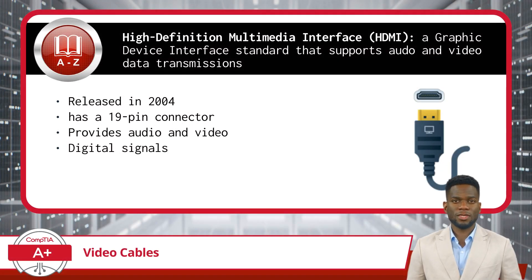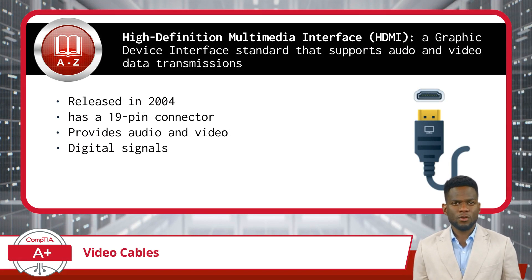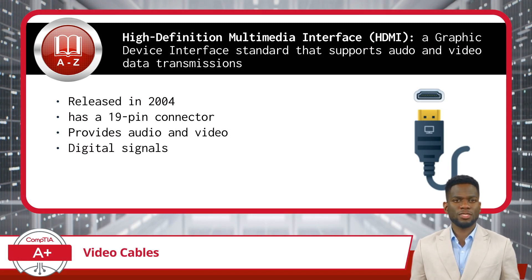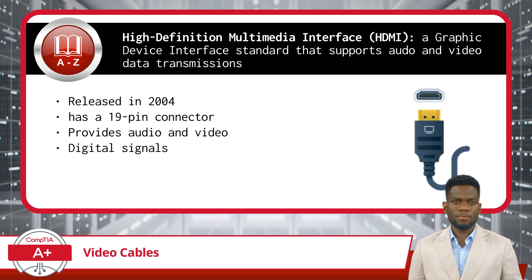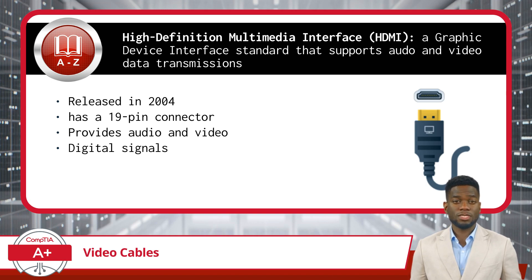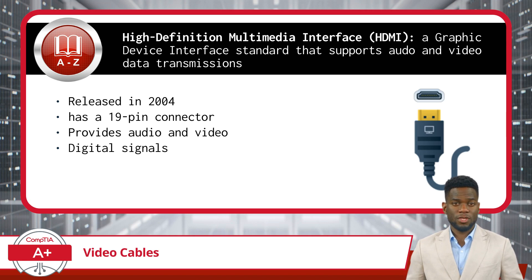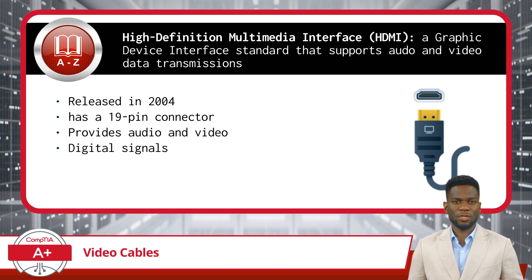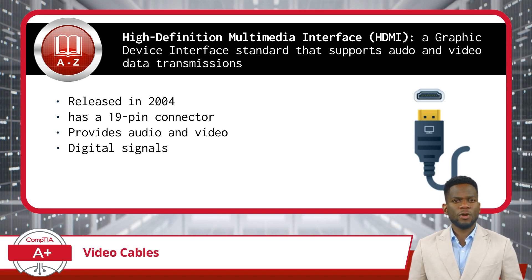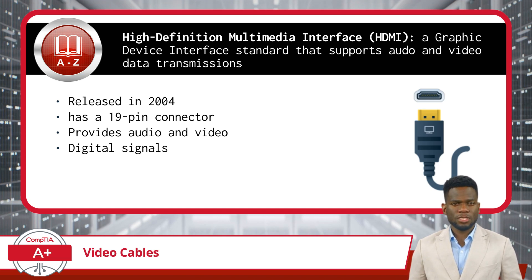Moving forward from DVI, in 2004 the HDMI Graphic Device Interface Standard was released. HDMI stands for High Definition Multimedia Interface and it comes with a 19-pin connector. The name really says it all — HDMI supports multimedia, meaning audio and video, in one interface. No longer do we need a second cable to transmit audio data. This standard was immediately adopted by television manufacturers and then quickly spread to all display devices. Today it is the most widely used graphic device interface. It supports high-definition resolutions and dropped analog signaling altogether, being fully digital.